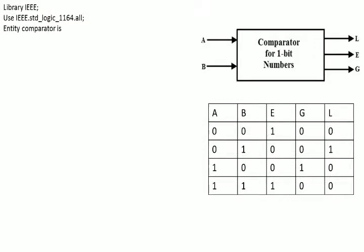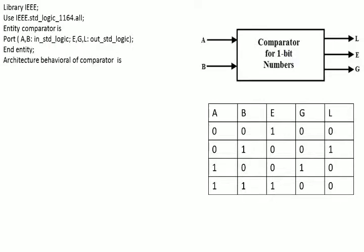Then we will come to declaring the entity. The entity name is comparator. We will define its port as: port A, B as input; equal, greater, less as output. We will end the entity declaration and now we will write the architecture.